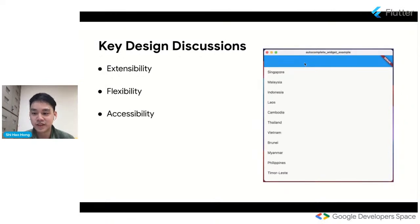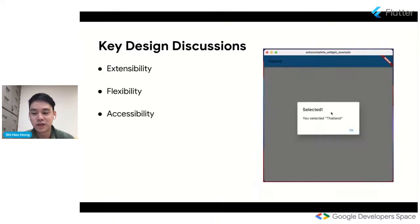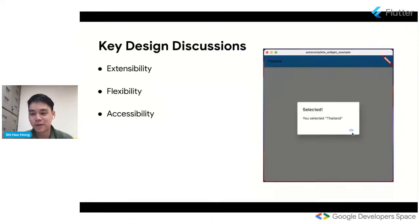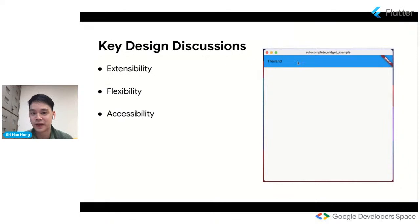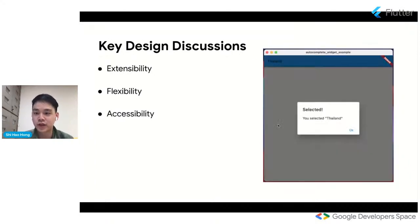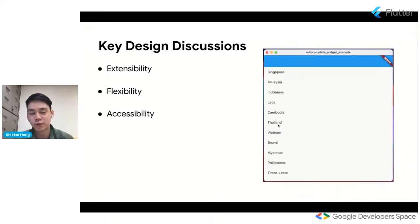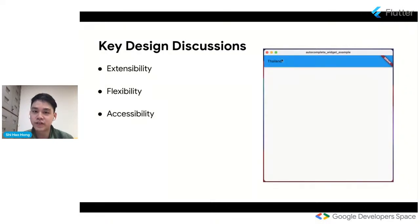The Material version is the out-of-the-box recommendation for the Material Design System's autocomplete component. Making the code more modular allows us to adapt quickly as Material and Cupertino libraries evolve — for example, iOS widget UI changes from version to version. It also helps us look ahead to supporting design systems on newer platforms like Windows, Linux, and macOS now that we support desktop.